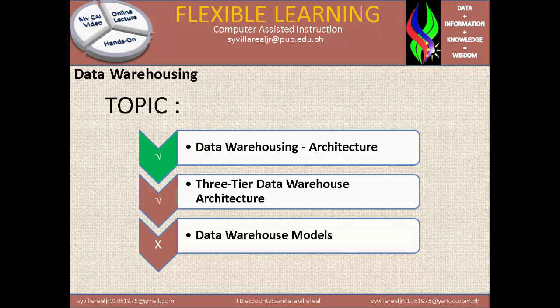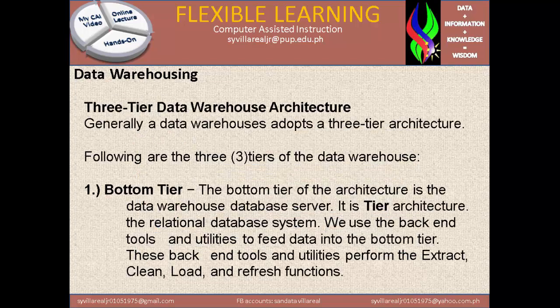Let's proceed to our second topic: Three-Tier Data Warehouse Architecture. Generally, data warehouses adapt a three-tier architecture. The first tier is the bottom tier. The bottom tier of the architecture is the data warehouse database server — a relational database system. We use back-end tools and utilities to feed data into the bottom tier. These back-end tools and utilities perform the extract, clean, load, and refresh functions.